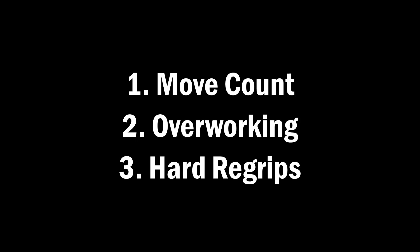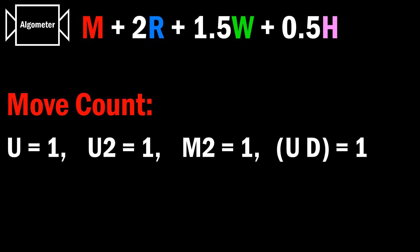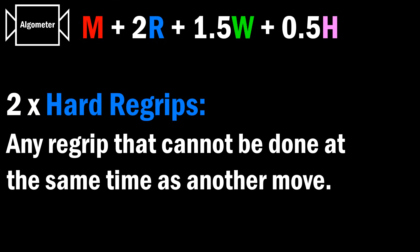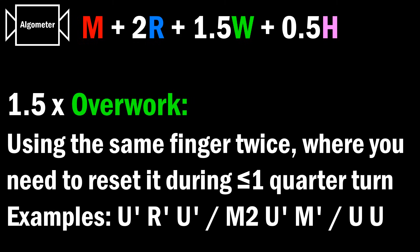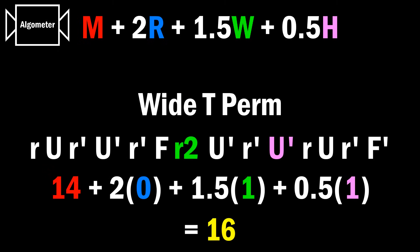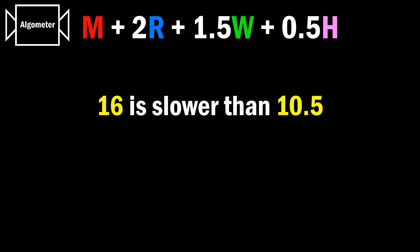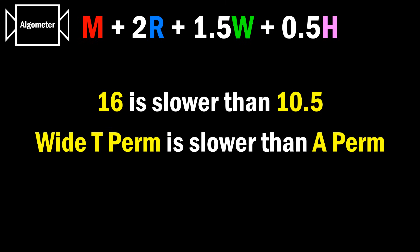Now if you understand all of the concepts that I used there, you can look at how this formula works. First, you count the number of moves, where a quarter turn is one move, a half turn is one move, a slice turn is one move, and two moves that can be done at the same time is still one move. So you take the number of hard re-grips and multiply that by two. Then add 1.5 for every time you overwork a finger. And lastly, add 0.5 for every time you see a half turn. For example, the wide T-perm comes out to be 16, while the A-perm comes out to be 10.5. So the bigger the number, the longer the algorithm takes to do.